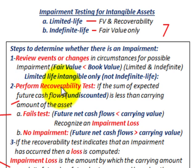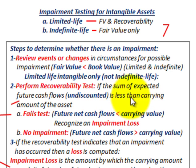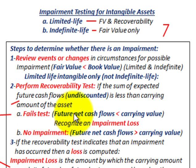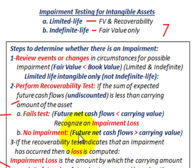We're going to perform a recoverability test — that's the sum of expected future cash flows, undiscounted. If it's less than the carrying amount of the asset, then you're going to have an impairment. This is where it fails the test: if the future net cash flows are less than the carrying value, you'd recognize an impairment loss. There would be no impairment if the future net cash flows are greater than the carrying value.